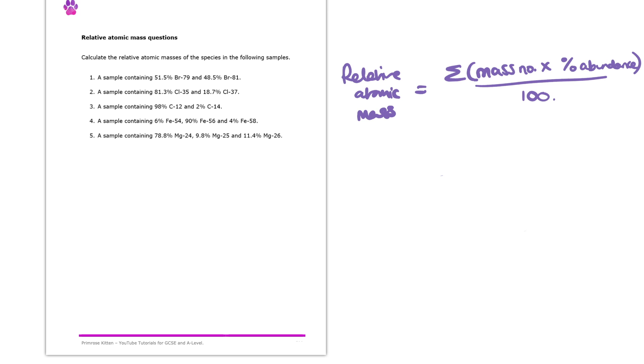But that alone doesn't stop it. There could be even more, but we're just going to repeat the process and it will end up giving us our answer. So here we can see we've got 6% of iron-54, 90% of iron-56 and 4% of iron-58. So let's put this now into our equation. We're going to use it in exactly the same way. We're going to do mass times percentage plus mass times percentage plus mass times percentage and then divide it all by 100.